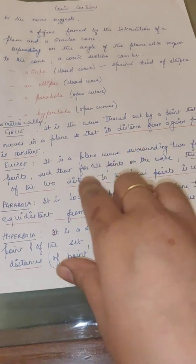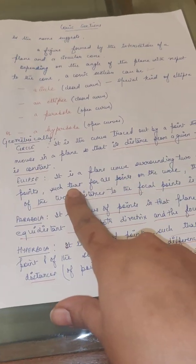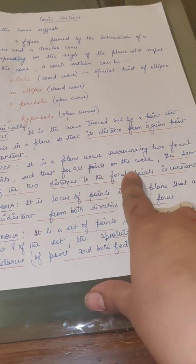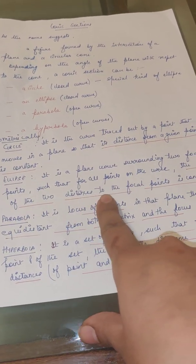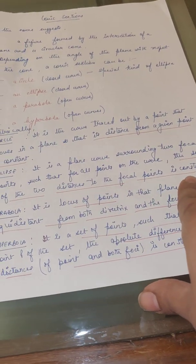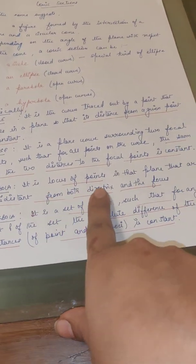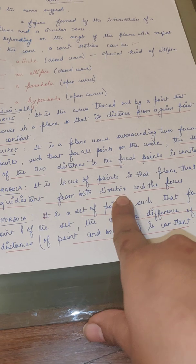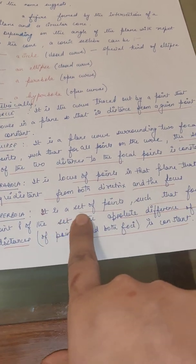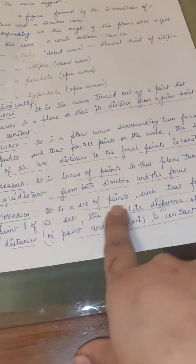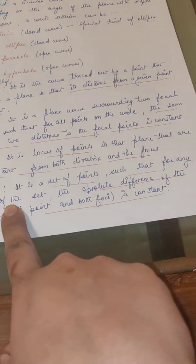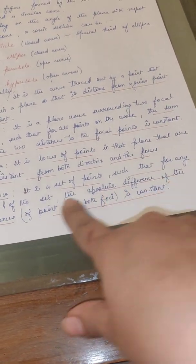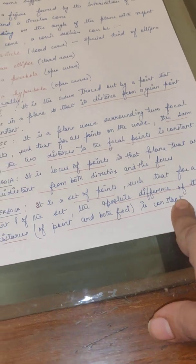Similarly, ellipse is a plane curve surrounded by two focal points such that for all the points, the sum of the two distances of the focal points is constant. Parabola is a locus of points in that plane that are equidistant from both the directrix and focus. Hyperbola is a set of points such that for any point P of the set, the absolute difference of the distances is constant.